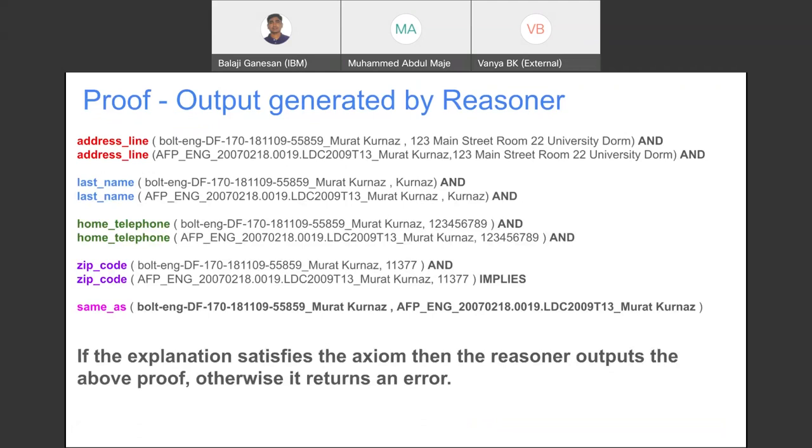So if the GNN explanation satisfies the axiom, then the reasoner would output such a proof. But if it doesn't, then it returns an error. So this way we can evaluate the explanation.